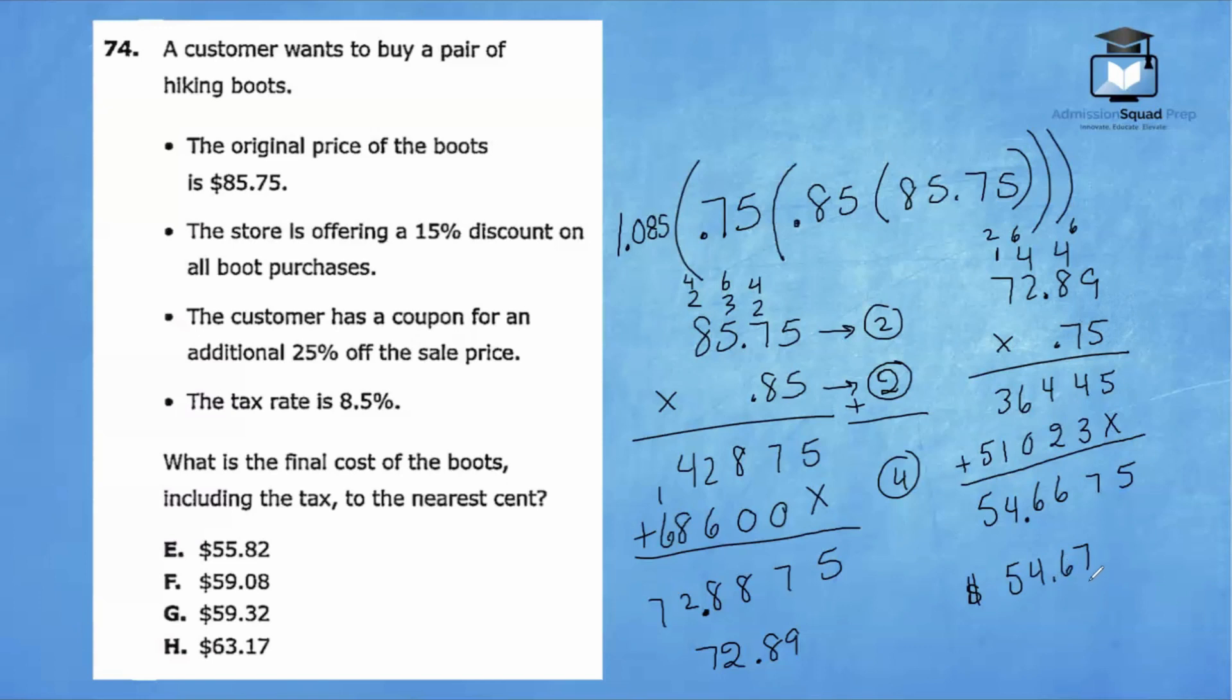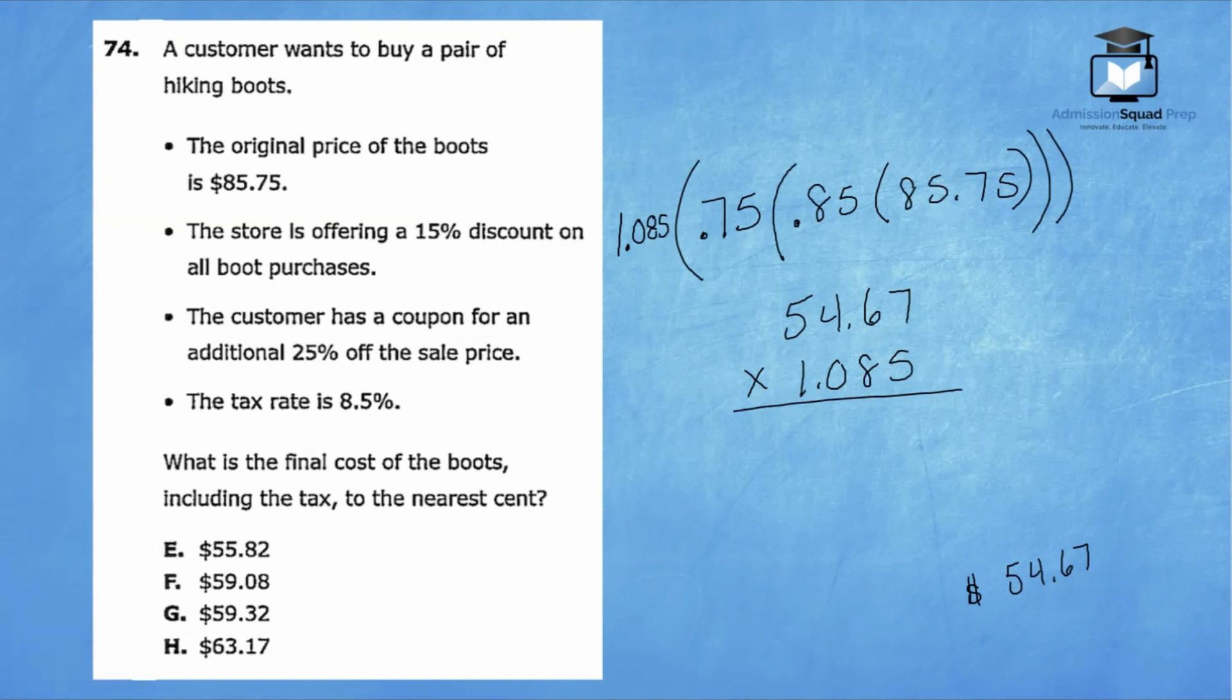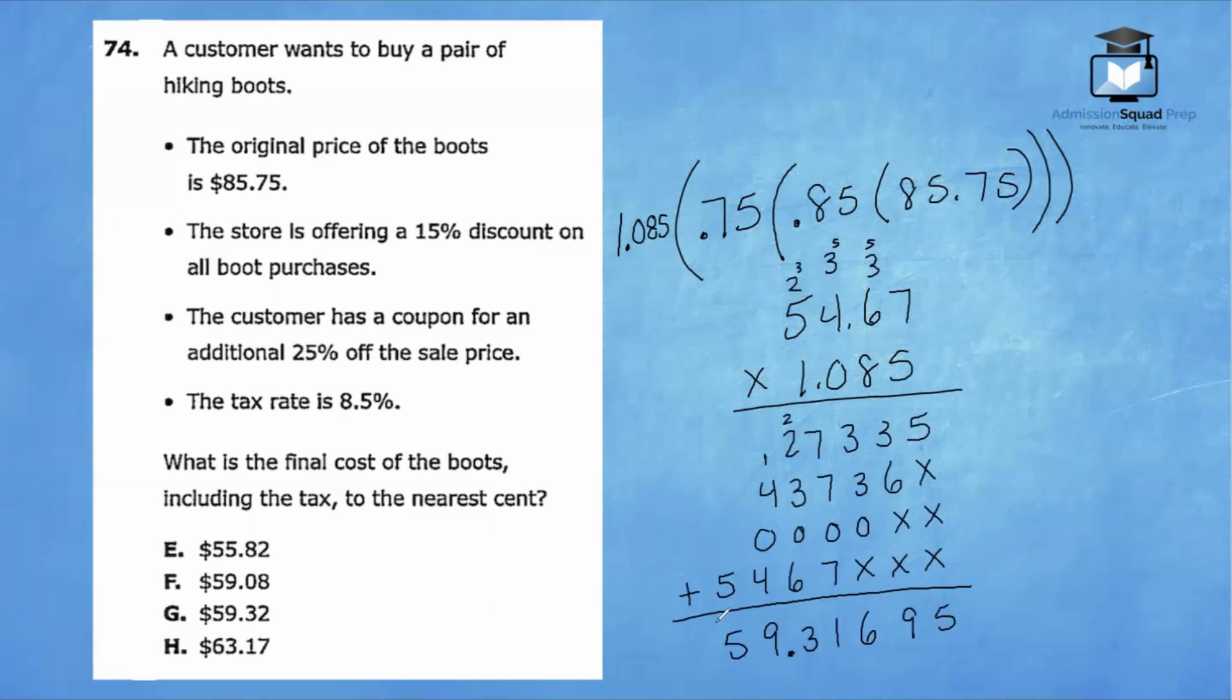The final step is to identify the tax. So we're going to multiply 54.67 times 1.085. So after multiplying $54.67 times 1.085, we get 59.31695. Make sure you compare your notes to what you see here on my screen. The final answer requires us to round to the nearest cent. So we have $59.32. So the correct answer is choice G.